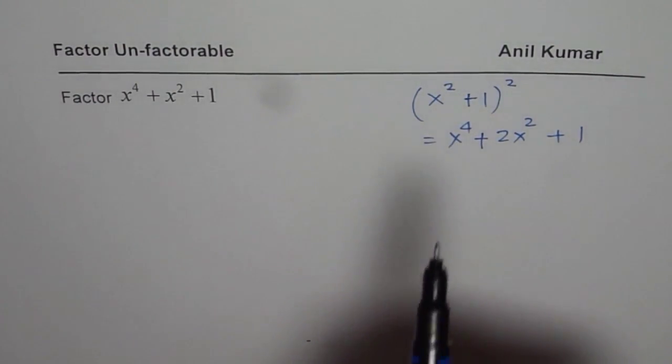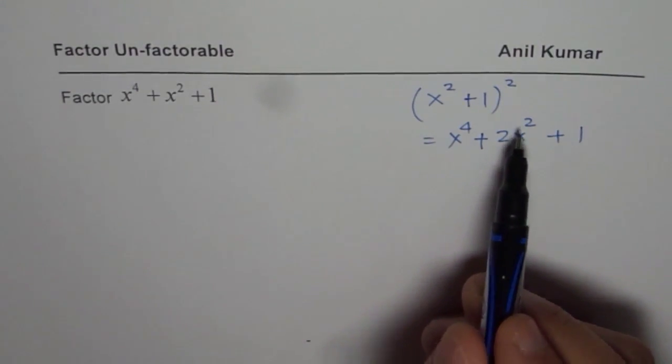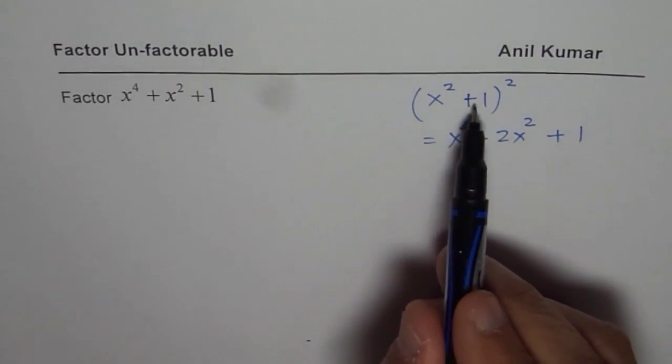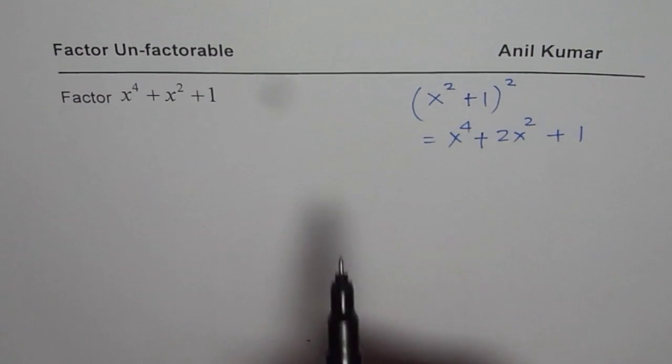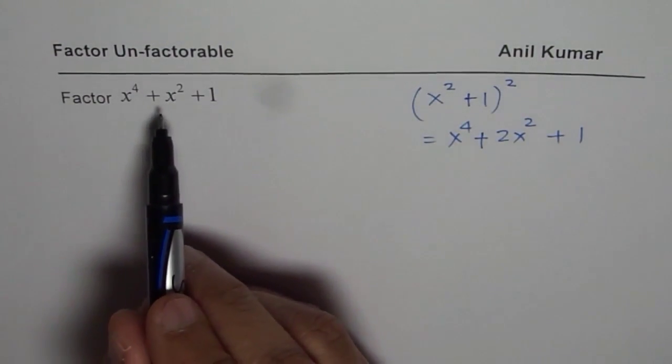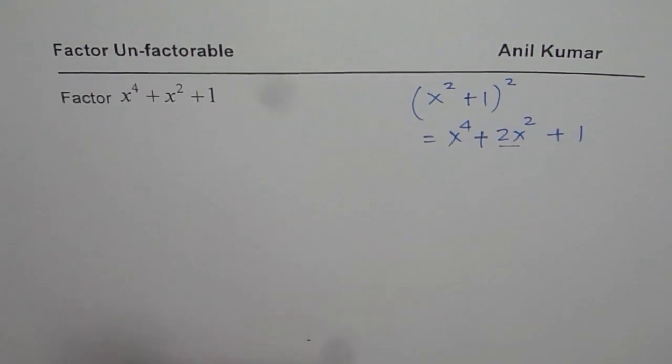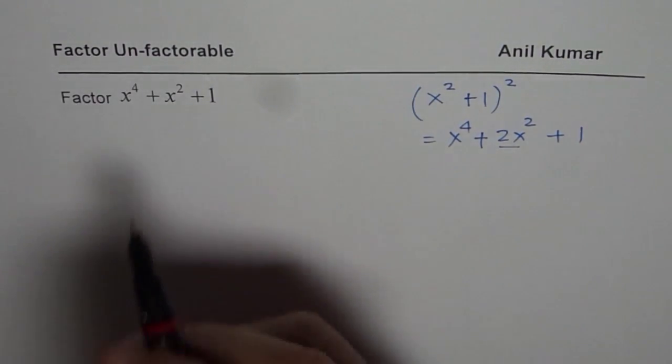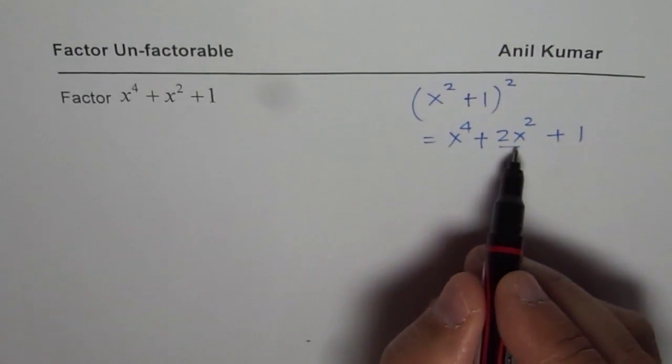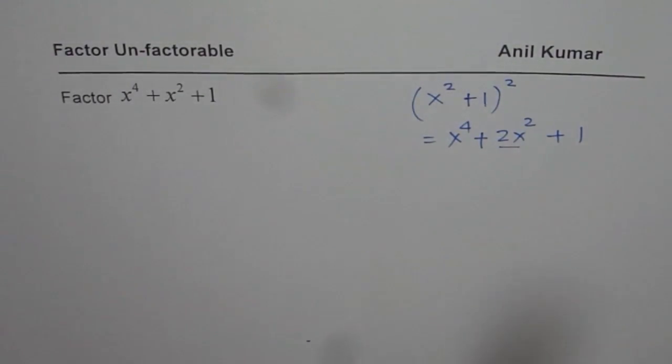Now, if you see, we get x to the power of 4 plus 2x square plus 1. That can be written as x square plus 1 whole square. But what do we have? We have only x to the power of 4 plus x square plus 1. How do I get 2x square? Well, to get 2x square, we can add and subtract x square. So that is what we will do.